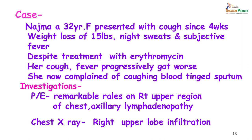Let us see a case. Najma is a 32-year-old female who presented with cough since 4 weeks. She had weight loss of 15 pounds over the last 1 month, night sweats and subjective fever. She complained that this fever usually rose in the evenings. Despite treatment with erythromycin, her cough and fever progressively got worse. She now complained of bringing out blood-stained sputum. On examination she had crackles in the right upper region of the chest, axillary lymphadenopathy, and her X-ray chest showed a right upper lobe infiltration.